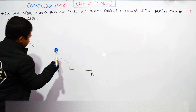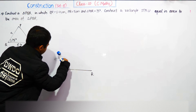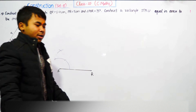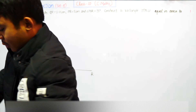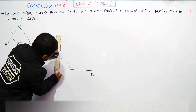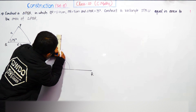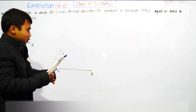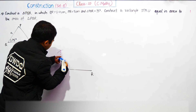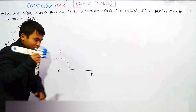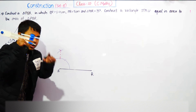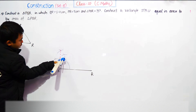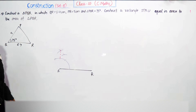The cut should be made here. 90 degrees lies between 60 and 120, and it's the midpoint. So the midpoint of 60 and 120 gives 90 degrees. From that, take the midpoint between 90 and 60 — that gives 75 degrees. Reduce the compass slightly so the arc falls between 60 and 90. Keep the same length from 60 to 90, then mark from 90 as well to get 75 degrees.